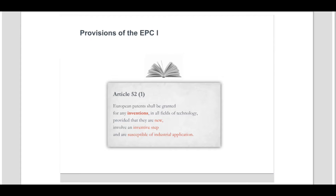Let us look at the provisions of the EPC regarding patentability. Article 52.1 EPC refers to four criteria that subject matter must satisfy in order to be patentable. Article 52.1 EPC reads: European patents shall be granted for any inventions in all fields of technology, provided that they are new, involve an inventive step and are susceptible of industrial application. It is notable that the EPC does not provide a definition for the term invention. In this first module, we will focus on clarifying when the first criterion — that of subject matter being an invention — is fulfilled.